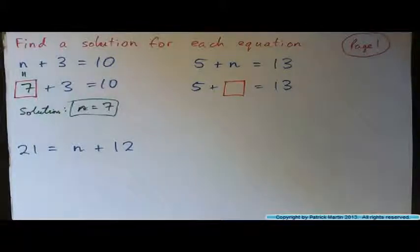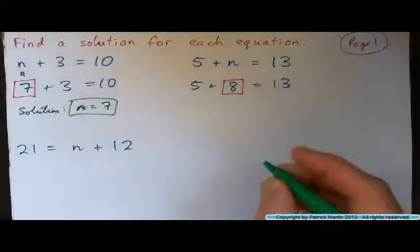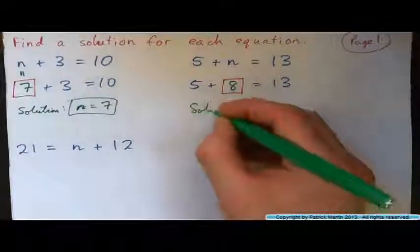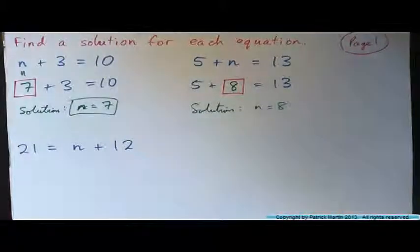So a letter just represents a box basically, a box where you write a number. Can you figure that one out? The answer is five plus eight, right? So the solution to that equation is n equals eight.